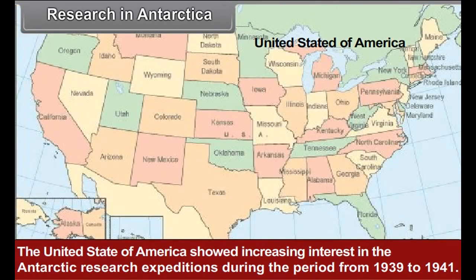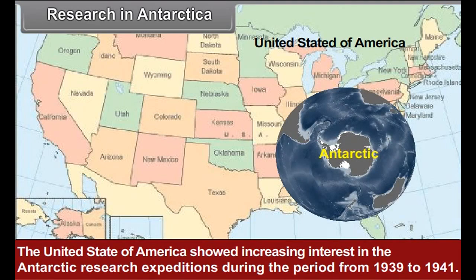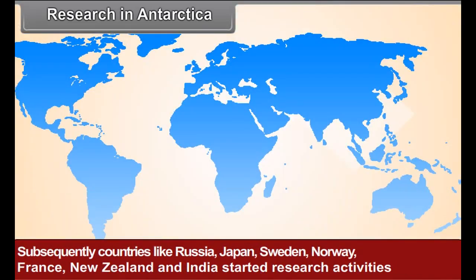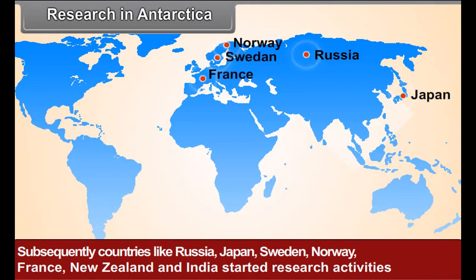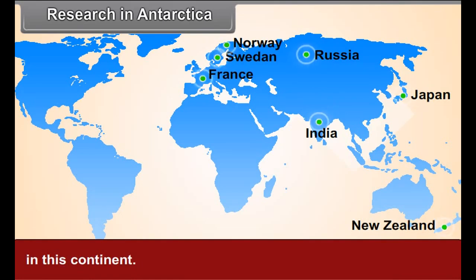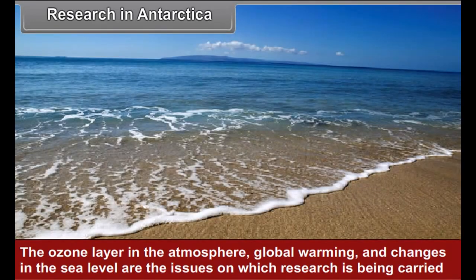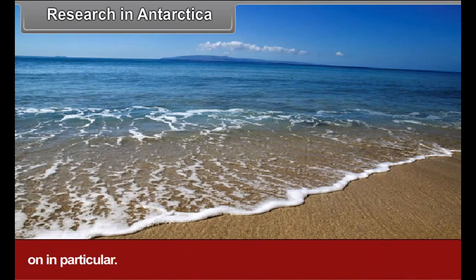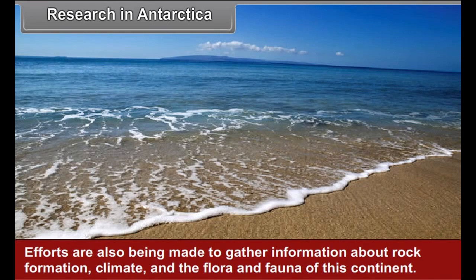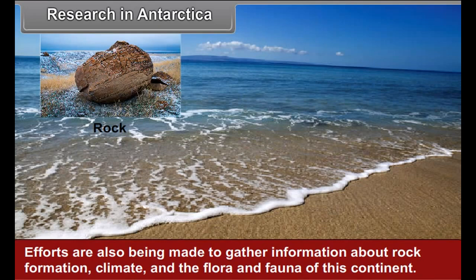Research in Antarctica: The United States of America showed increasing interest in Antarctic research expeditions during the period from 1939 to 1941. Subsequently, countries like Russia, Japan, Sweden, Norway, France, New Zealand, and India started research activities in this continent. The ozone layer in the atmosphere, global warming, and changes in sea level are the issues on which research is being carried on in particular. Efforts are also being made to gather information about rock formation, climate, and the flora and fauna of this continent.